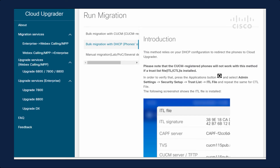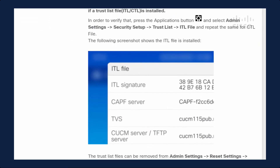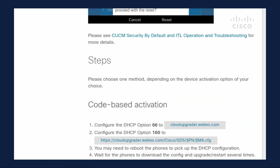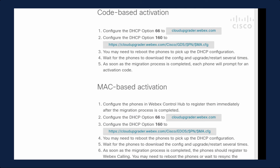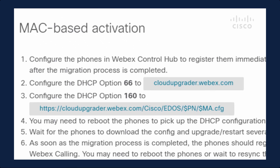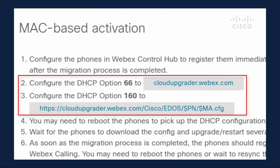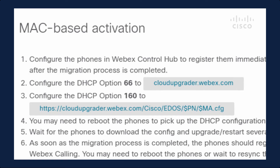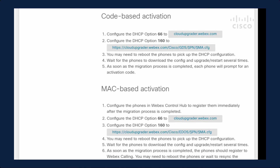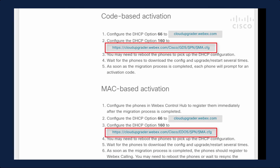The second option also involves upgrade.cisco.com and uses the DHCP options method. First, make sure you've cleared all the security settings on your phone so the process will work. Then set your DHCP options: set option 66 to cloudupgrader.webex.com, and set DHCP option 160 to the string listed on the site. Once that is done, it will automatically register to WebEx Calling if you've plugged your MAC addresses in advance. Note that the string for DHCP option 160 is different for MAC-based activation versus code-based activation — they are slightly different URLs, so don't mix them up.